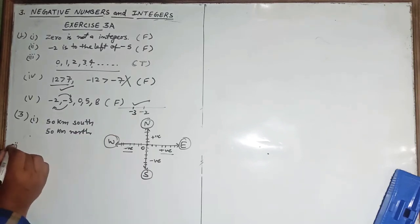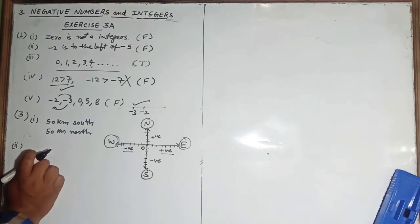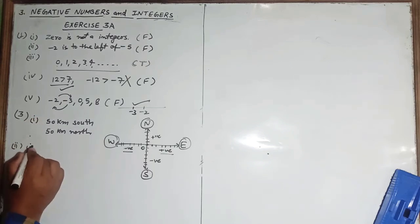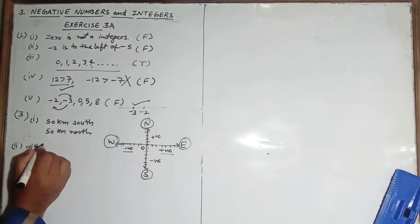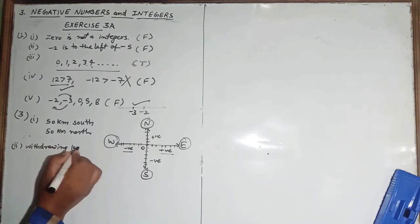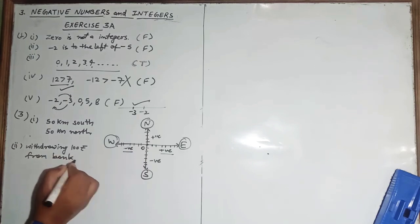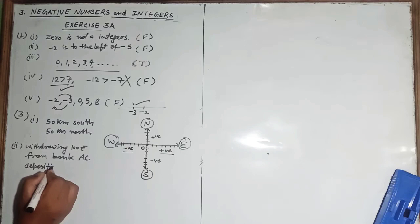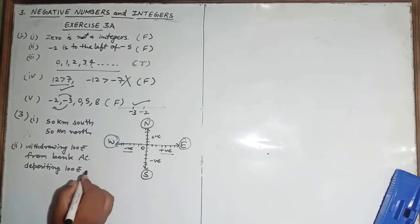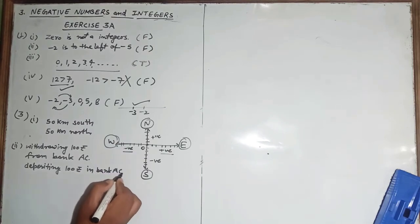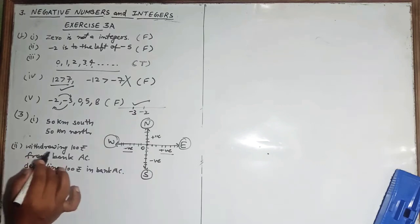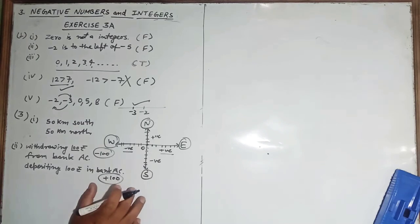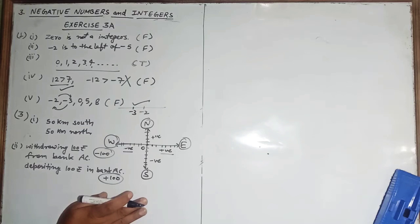Second part: withdrawing 100 rupees from the bank account. The opposite of withdrawing is depositing 100 rupees in the bank account. In integer form, withdrawing 100 rupees is minus 100, and depositing is plus 100. You can do the other parts the same way.